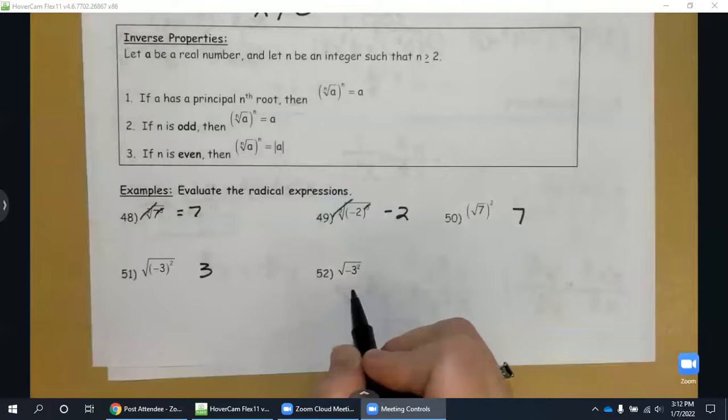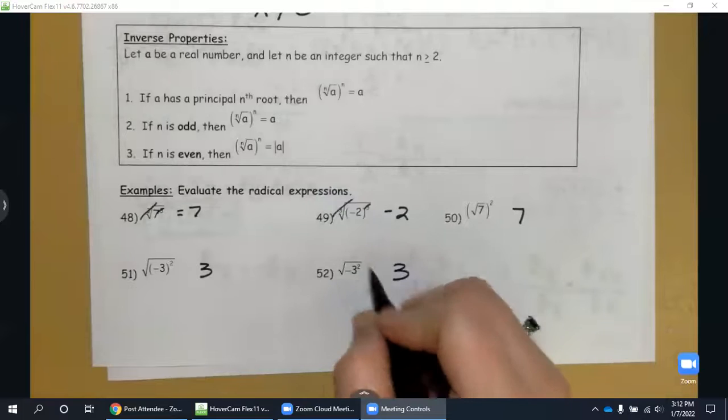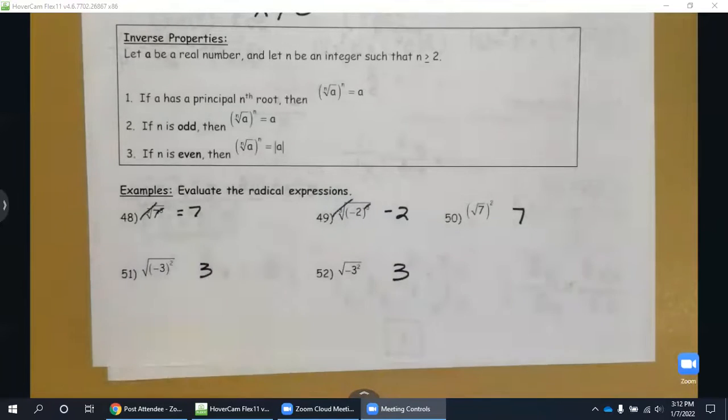And lastly, 52, square root of negative three. This actually is not—that's actually also going to be positive three, because remember, always the absolute value. And that will wrap up those notes.